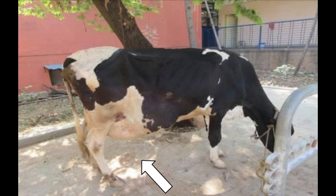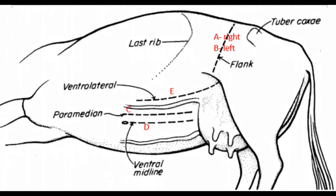Causes include automobile accidents, weakening of the abdominal musculature, or rupture of the prepubic tendon. It is commonly seen along the costal arch, high or low in the flank, between the last few ribs, or in the ventral abdominal wall near the midline.